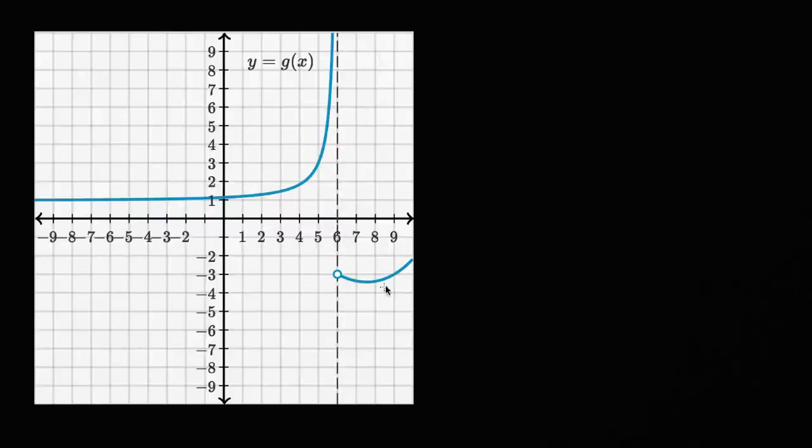So over here we have the graph of y equals g of x. And what I want to do is figure out the limit of g of x as x approaches positive six from values that are less than positive six, or you could say from the left, from the negative direction. So what is this going to be equal to?